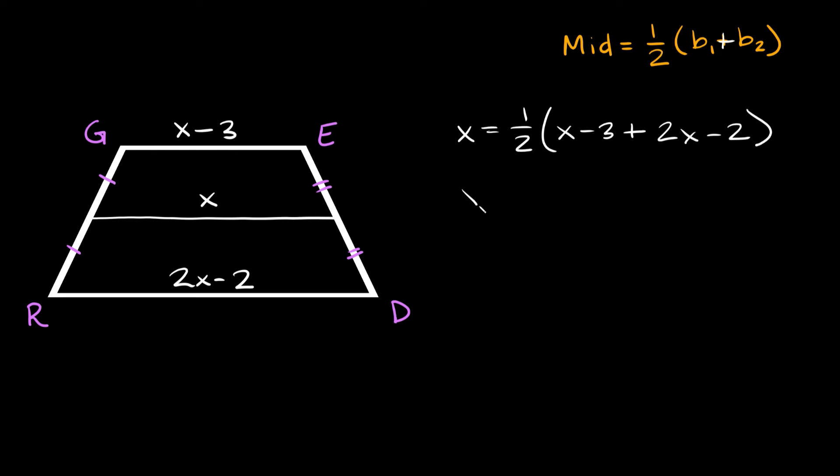So then here, we get x is equal to 1 half times, combining like terms here, we have an x and a 2x, which is equal to 3x. Here we have a negative 3 and a negative 2, which is negative 5. So again, to get rid of this fraction, we could just multiply both sides by 2. So they cancel out over here. On the left side, we're left with 2x is equal to 3x minus 5.